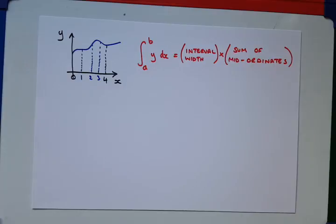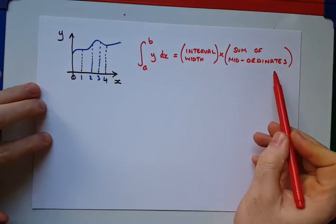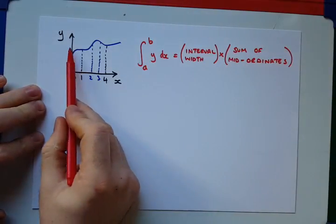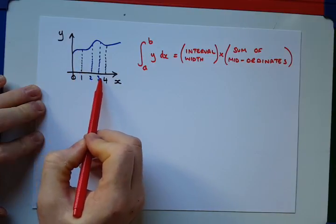Next, we need to work out what our mid-ordinates are, then. So, the mid-ordinate is the value of y at the midpoint of each of the intervals.